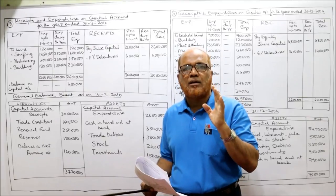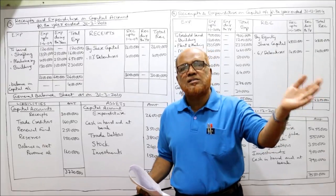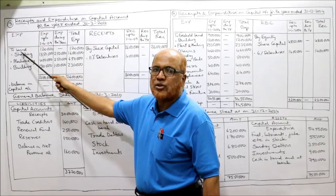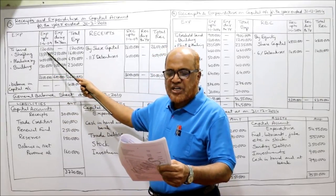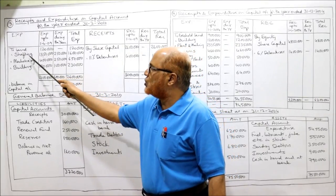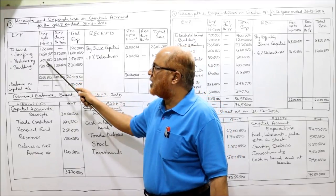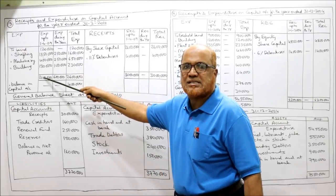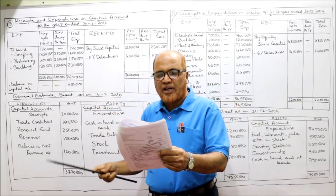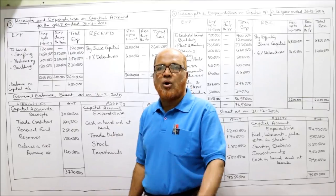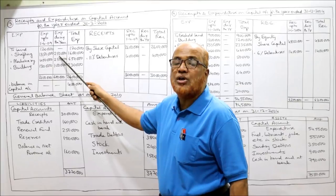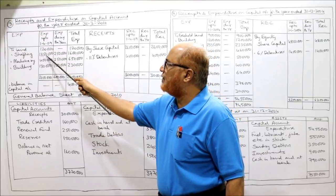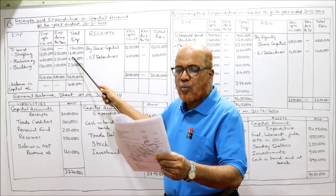Whatever is on 31st March 2009 is taken on 1st April 2009. Opening balance: land 1 lakh 20 thousand, shafting 13 lakh 50 thousand, machinery 4 lakh, building 1 lakh 30 thousand. During the year, additional expenditure on shafting was 2 lakh 50 thousand, so total shafting becomes 16 lakh. No additional expenditure on land, so it remains 1 lakh 20 thousand. Building additions during the year: 1 lakh, so building total becomes 2 lakh 30 thousand.